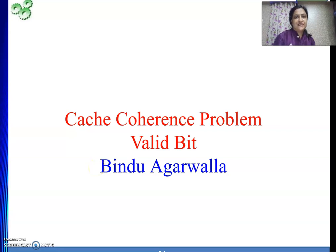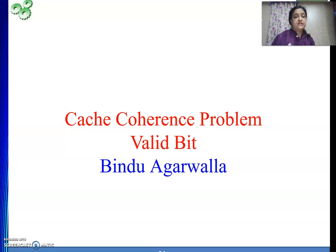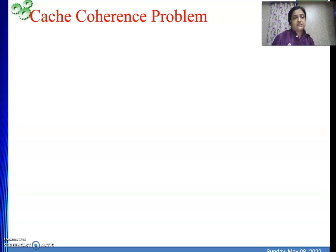Welcome to this video. We will be discussing a very important problem in computer organization and architecture called the cache coherence problem. Related to this, each block in cache memory has an extra bit called the valid bit. We will see the importance of the valid bit and how it relates to cache coherence.